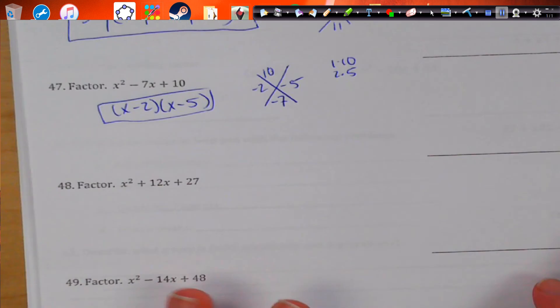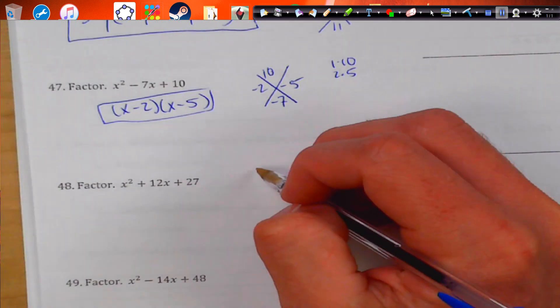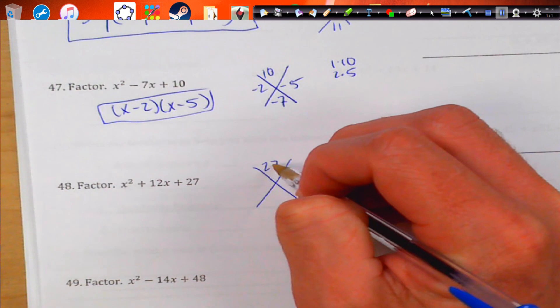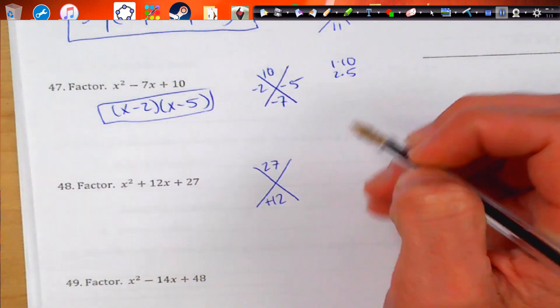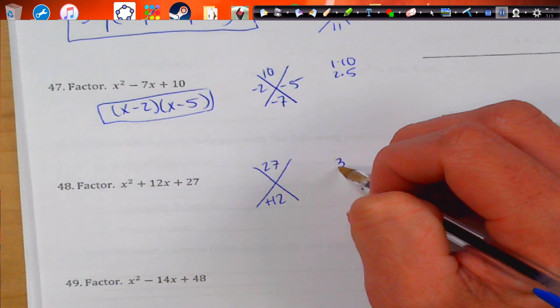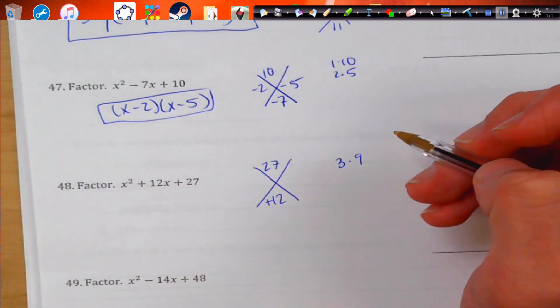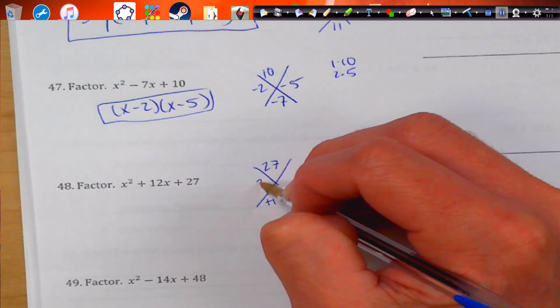So, we don't have a number in the front. We can go straight into our little binomials. 27 and positive 12. So, we have 3 times 9. And that's the first one I thought of. And that one works. So, we're done.